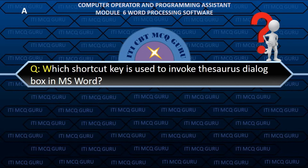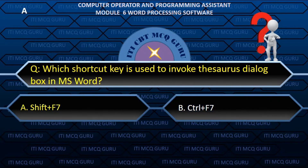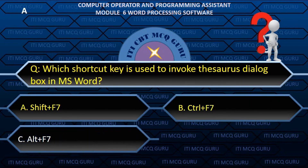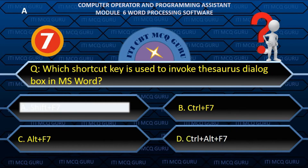Which shortcut key is used to invoke the Thesaurus dialogue box in MS Word? A. Shift plus F7.